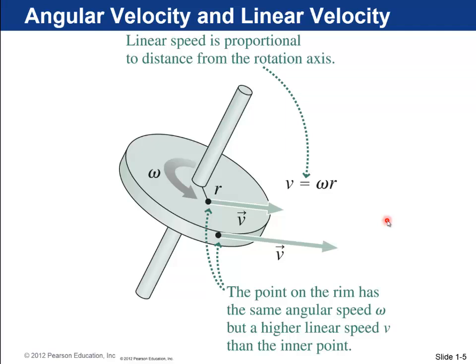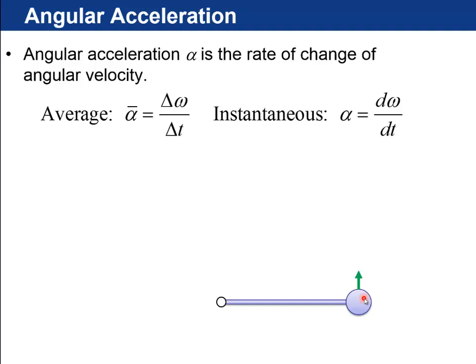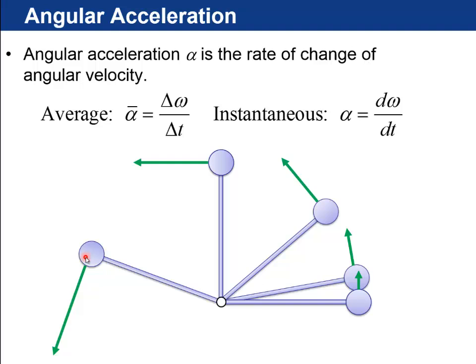Next is angular acceleration. Imagine this bar going around — it starts with some low velocity, and then as time goes by it's going faster and faster, speeding up. So omega is increasing, meaning there's a delta-omega over some time — that's the change in angular velocity per time. Average acceleration is alpha-bar, and the instantaneous angular acceleration is the time derivative of omega.